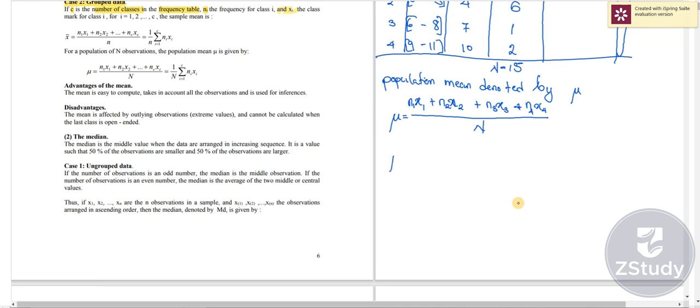what we have now is mu equal to n₁ – the first frequency is 6 – multiplied by the midpoint which is 1, plus second frequency is 6 multiplied by the midpoint which is 4, plus the third frequency is